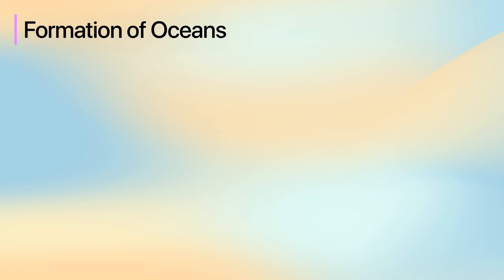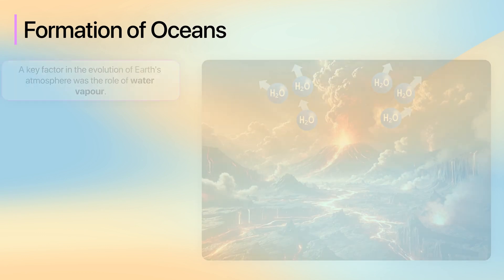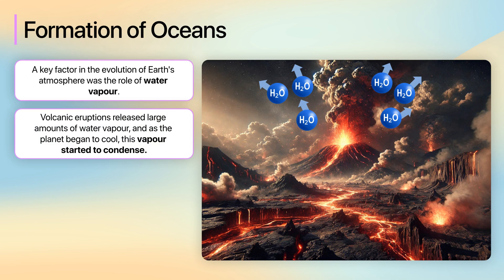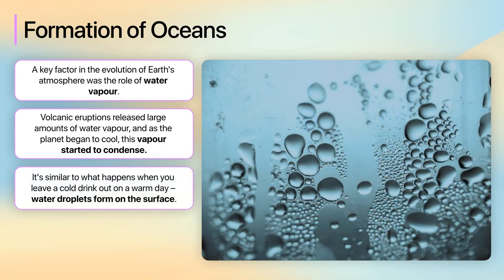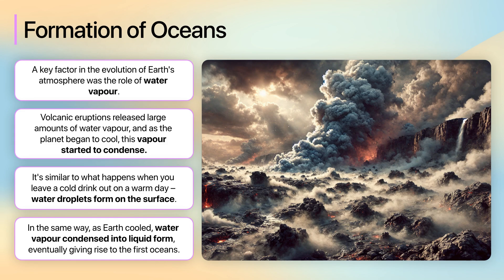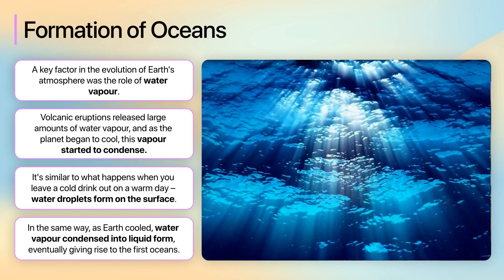Now, let's look at the formation of oceans. A key factor in the evolution of Earth's atmosphere was the role of water vapour. Volcanic eruptions released large amounts of water vapour, and as the planet began to cool, this vapour started to condense. It's similar to what happens when you leave a cold drink out on a warm day. Water droplets form on the surface. In the same way, as Earth cooled, water vapour condensed into liquid form, eventually giving rise to the first oceans.